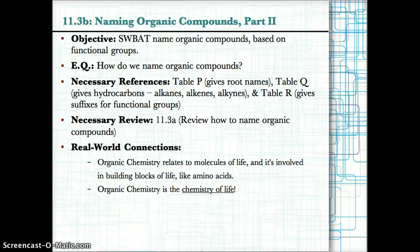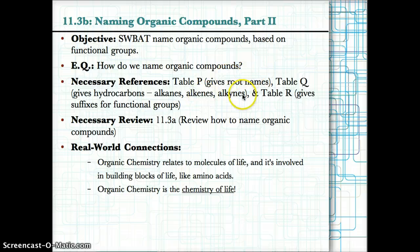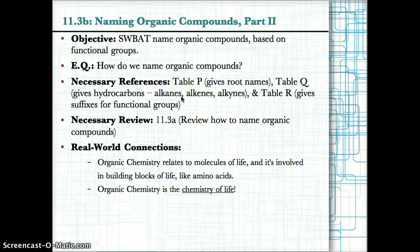11.3B, naming organic compounds. For this lesson, you're going to need table P, which gives prefixes for organic compounds, table Q, which gives hydrocarbons — alkanes, alkenes, and alkynes — and table R, which gives suffixes for functional groups. Let's move on to the lesson.